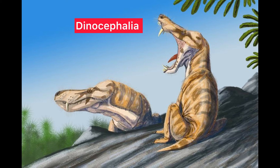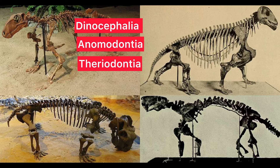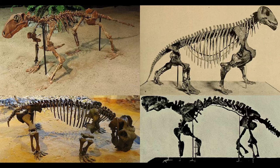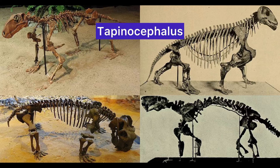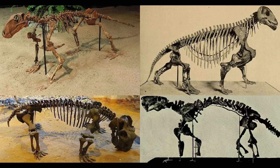Therapsids are divided into several subgroups including Dinocephalia, Anomodontia, and Theriodontia. Dinocephalians were some of the earliest therapsids to appear — large, robust animals with thickened skulls, possibly used for head-butting or combat. Examples include Tapinocephalus and Moschops. Despite their initial success, Dinocephalians went extinct by the Middle Permian, likely due to changing environmental conditions and competition with other therapsid groups.